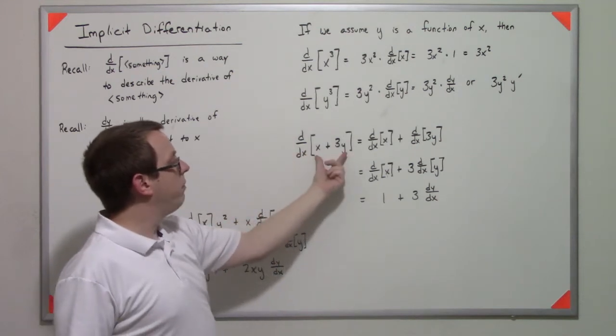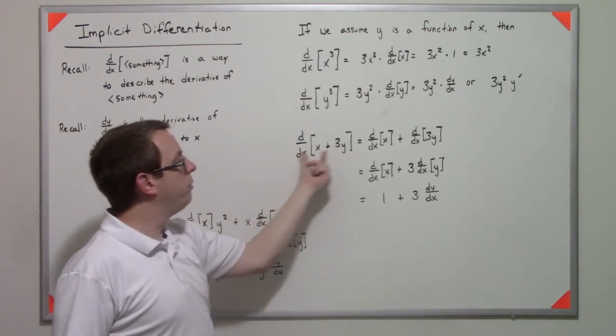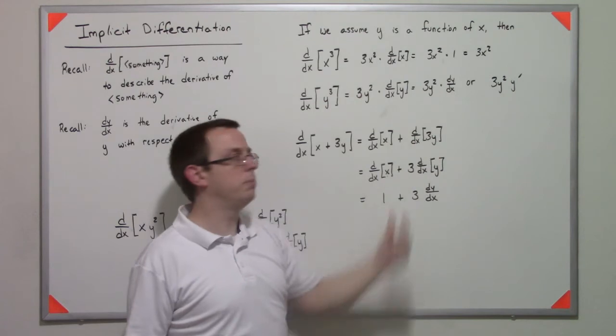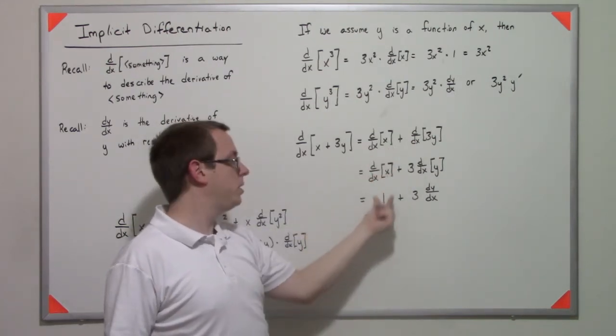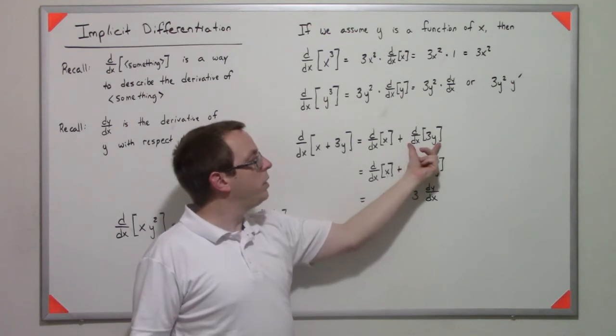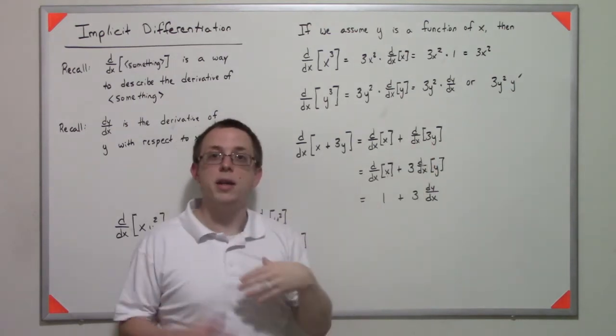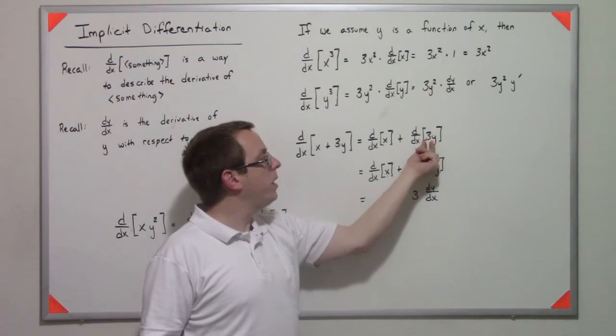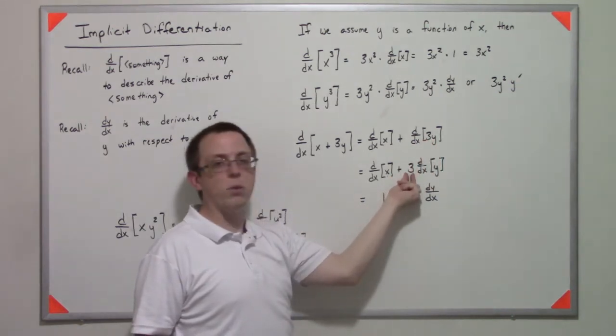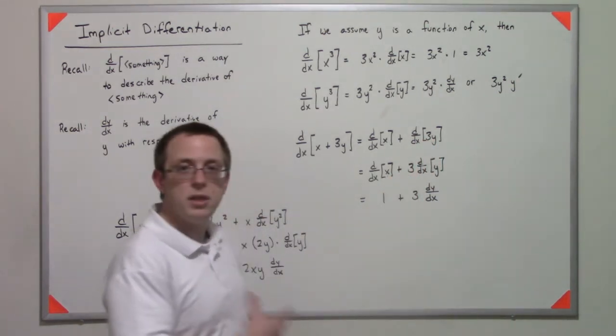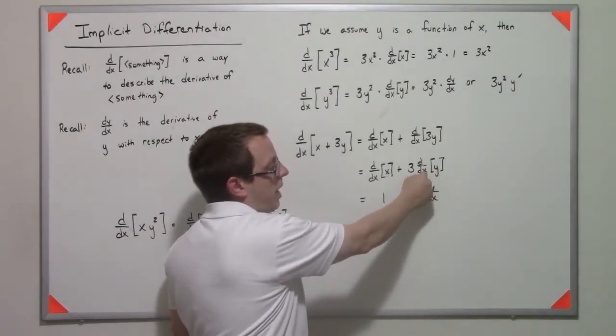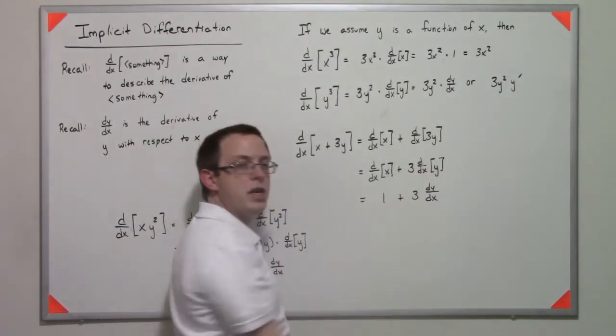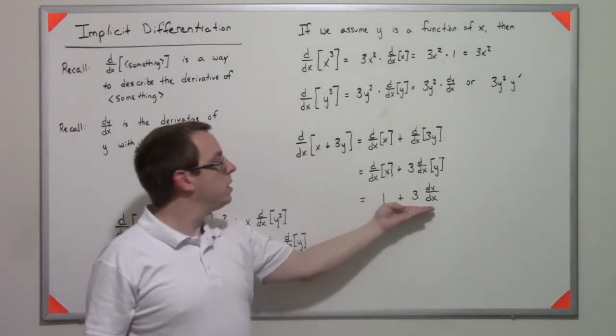We know the derivative of x³ with respect to itself is 3x². For this term we have 3y, so by the constant multiple rule that means we can bring that three out to the front. Since the derivative with respect to x of y is just dy/dx, this is our derivative of this term.